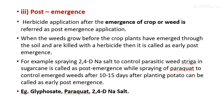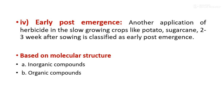Post-emergence: application of herbicide after the emergence of crop or weed is referred to as post-emergence application. When weeds grow before crop plants have emerged and are killed with herbicide, it is called early post-emergence. Example: spraying of 2,4-D salt to control parasitic weeds (Striga) in sugarcane is post-emergence, while spraying of paraquat to control emerged weeds 10-15 days after planting potato is early post-emergence. Examples: glyphosate, 2,4-D salt. Application in slow-growing crops like potato and sugarcane 2-3 weeks after sowing is also classified as early post-emergence.